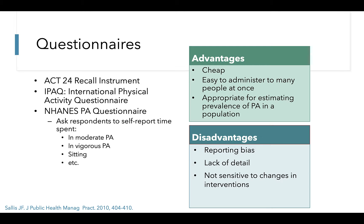However, questionnaires are susceptible to reporting bias due to inaccurate time estimation, memory failures, or desirability bias where people are reporting what they think you want to hear. They also may not provide you with the detail you need to see changes in response to interventions.